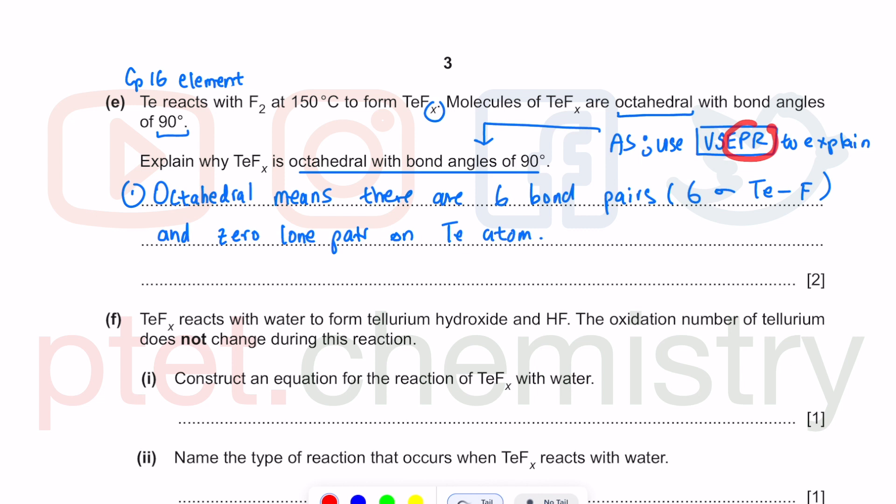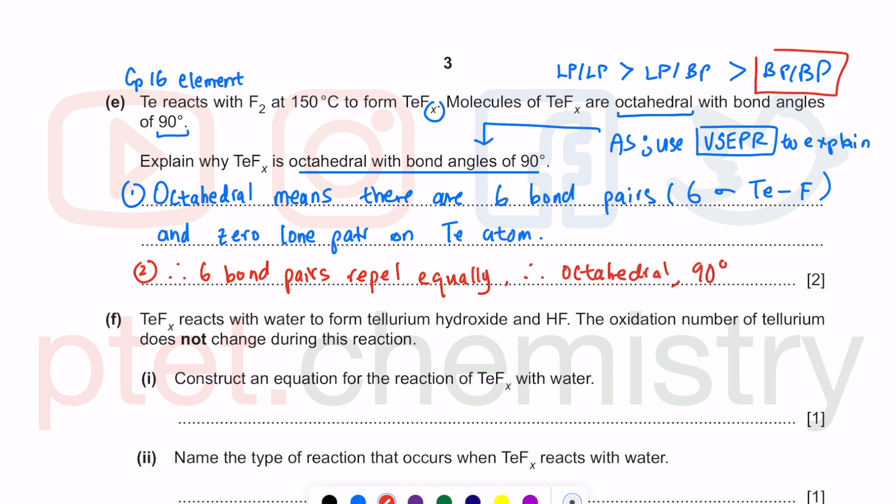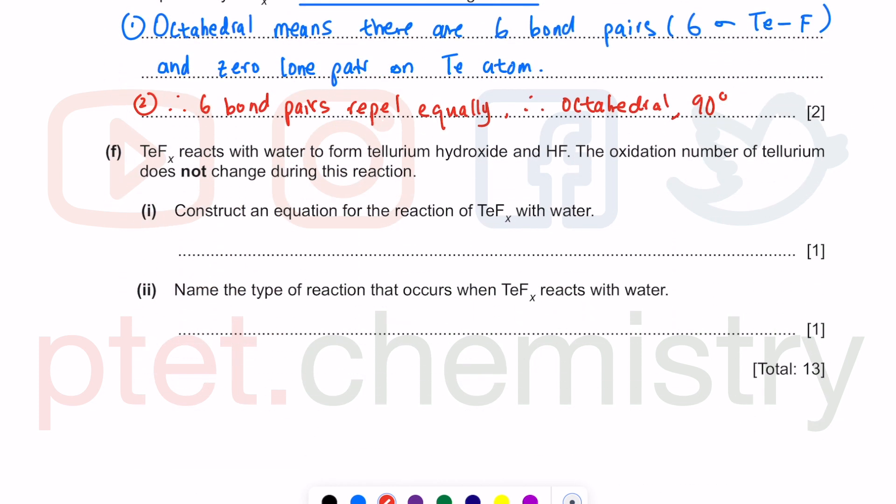You have six outer shell electrons as a group 16 element. The EPR stands for electron pair repulsion theory where lone pair-lone pair repel more than lone pair-bond pair, which repel more than bond pair-bond pair. Since we have zero lone pairs, the six bond pairs repel equally in the absence of any lone pair, giving the octahedral shape with bond angle 90 degrees.